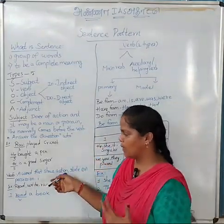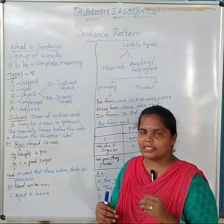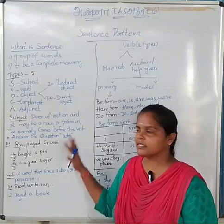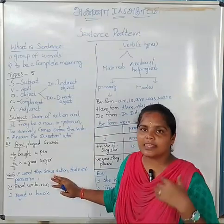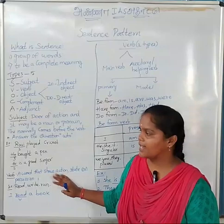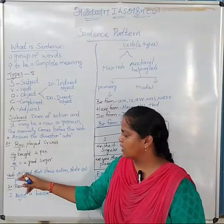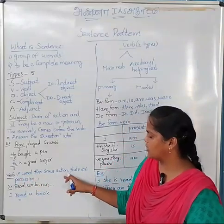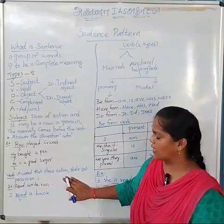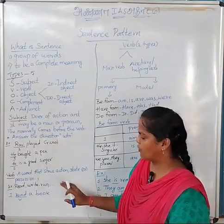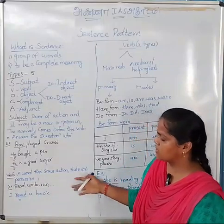Next, verb. Verb is any word that shows action. What is a verb? A word that shows action, state, or position. Examples of verbs: Read, Write, Run, Walk, Sing. Action words are verbs.